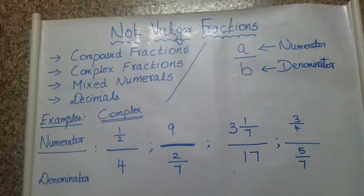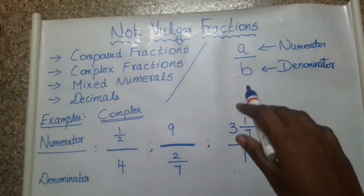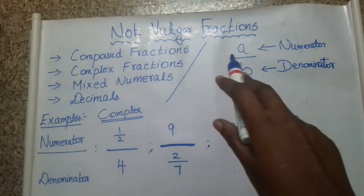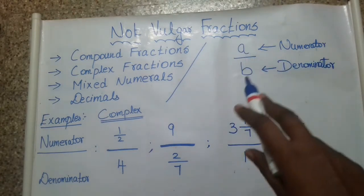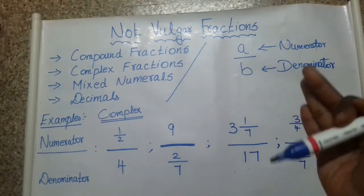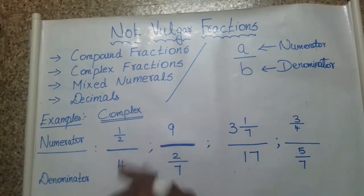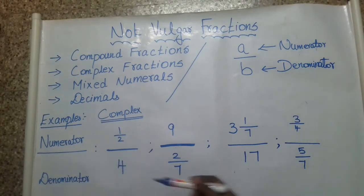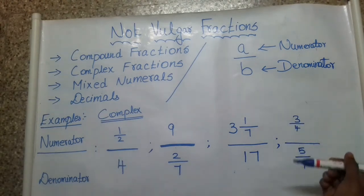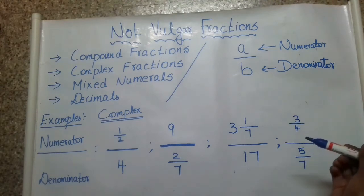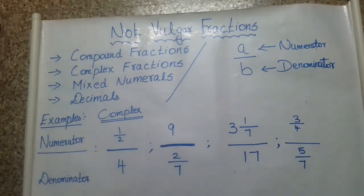First, let's look at complex fractions. Fractions are normally written in A by B or P by Q form, where A is the numerator and B is the denominator. For complex fractions, the definition is: either the numerator or denominator, or both, is a fraction or a mixed number. That is a complex fraction.